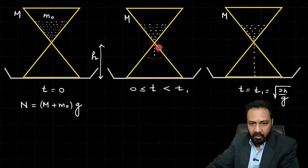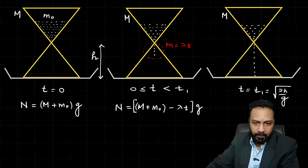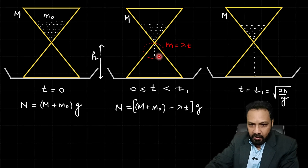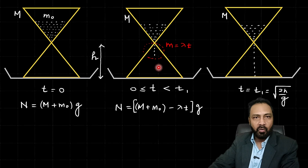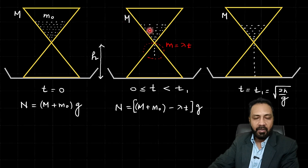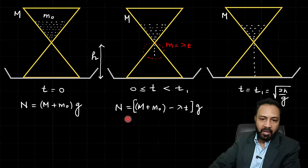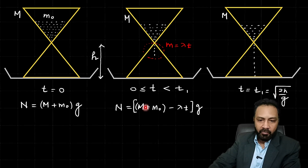So the mass in the stream is λt, and the mass remaining in the upper reservoir is m₀ − λt. This mass λt in free fall has no contact with the hourglass. Drawing the FBD, only the mass in contact with the hourglass contributes — that is M plus the sand still in the upper reservoir, m₀ − λt. So the normal reaction N = (M + m₀ − λt)g, valid from t = 0 to t = t₁ = √(2h/g). The normal reaction decreases linearly.